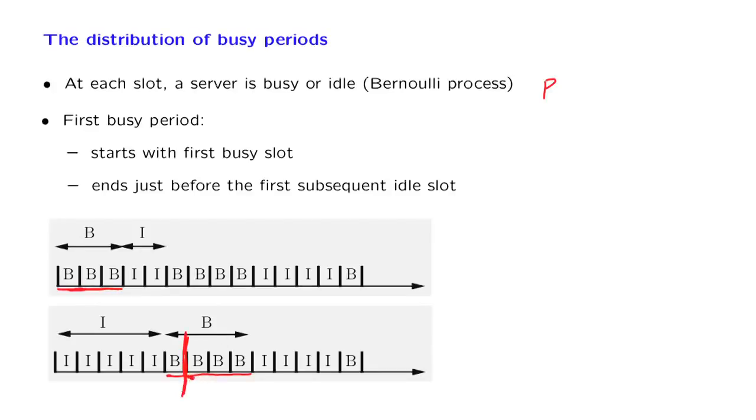Starting from this next slot here and going forward, what we have is a Bernoulli process. At each slot, there's probability p that it is busy and probability 1-p that it is idle.